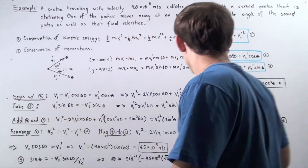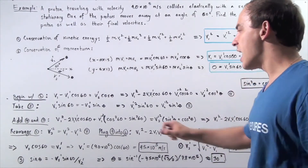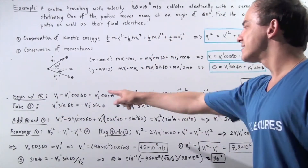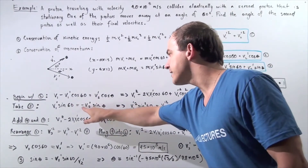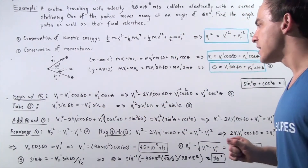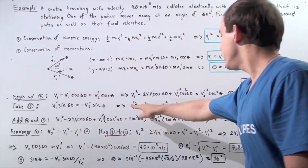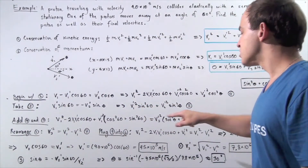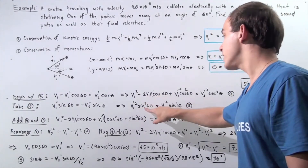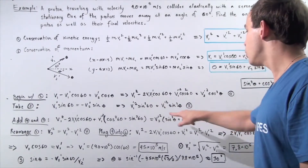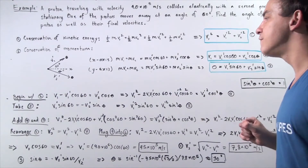Now taking equation 3 and moving the V1 prime term to the other side: V1 prime sine 60 equals negative V2 prime sine theta. Squaring both sides gives: V1 prime squared·sine squared 60 equals V2 prime squared·sine squared theta. Let's call this equation 5.